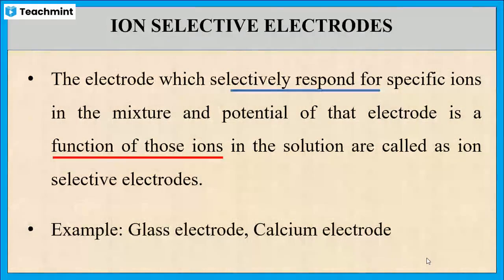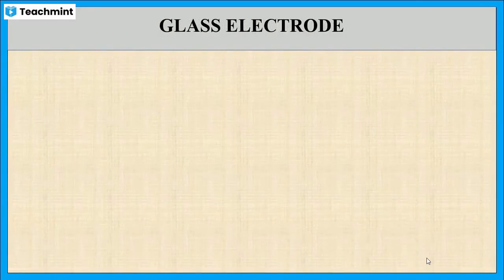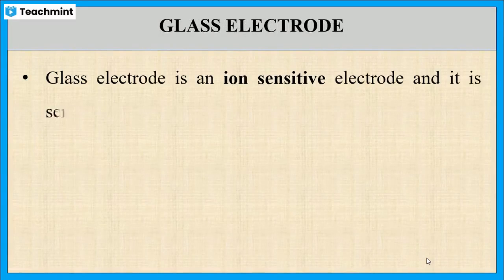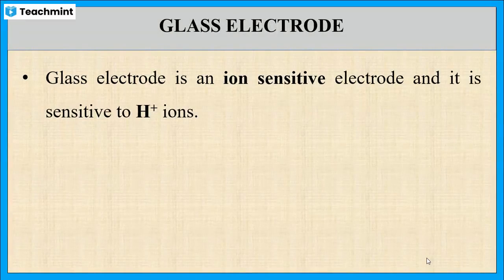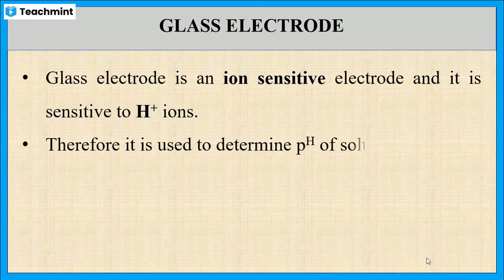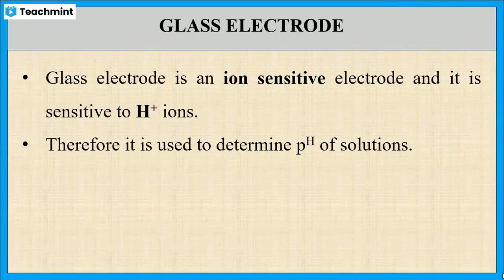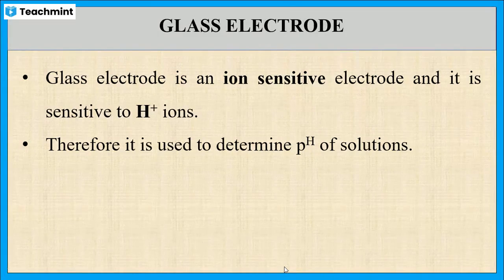The most common examples of ion selective electrodes are the glass electrode and the calcium electrode. The glass electrode is an ion sensitive electrode and it is sensitive to H+ ions. Hence it is used to determine the pH of a solution. pH is nothing but minus log of the concentration of H+, so this glass electrode is sensitive to H+ ions and can be used to determine the pH of a solution.